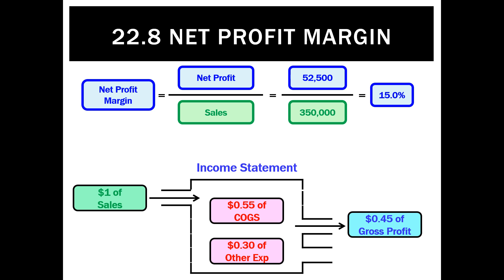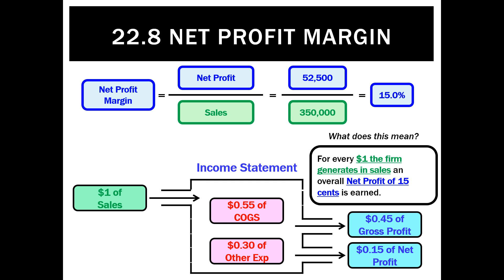Other expenses — so all our wages, insurance, rent and so on — came out to 30 cents of every sales dollar. What that left for us at the end was 15 cents of net profit. It's the part that remains in profit once all cost of goods sold and expenses have been deducted. So for every dollar the firm generated in sales, an overall net profit of 15 cents is earned.